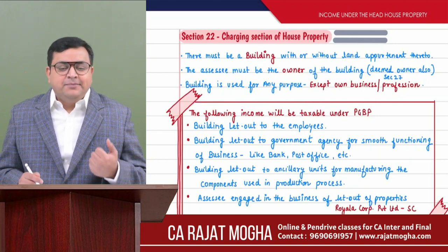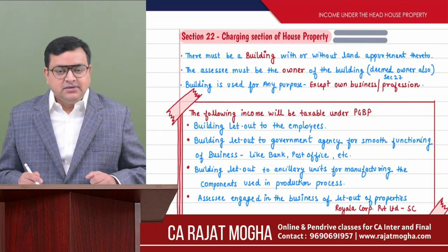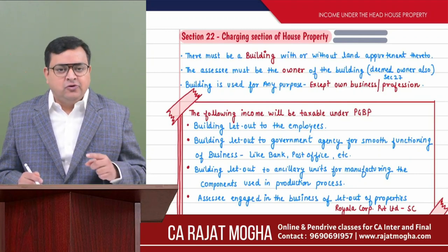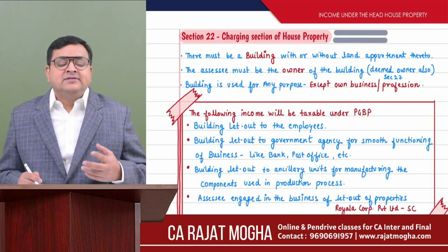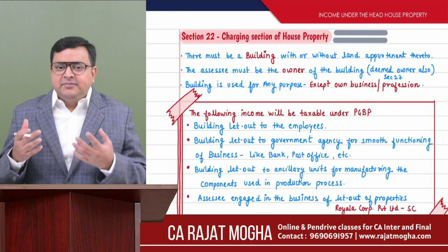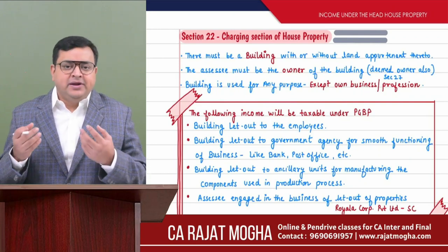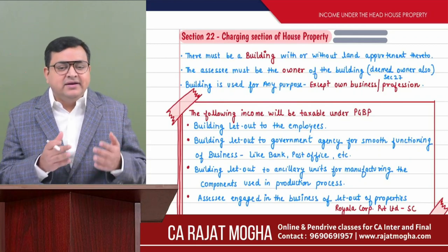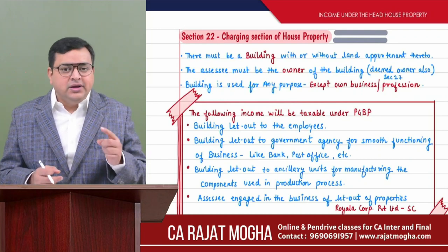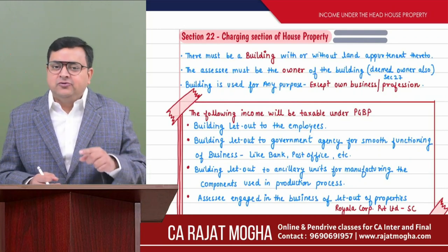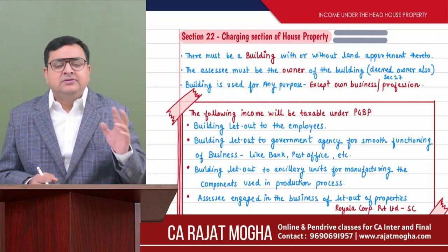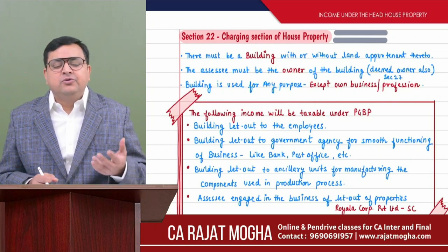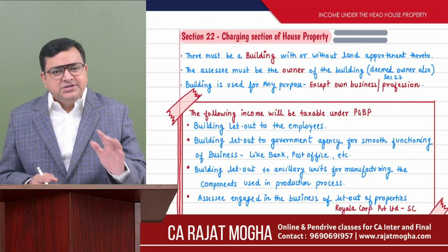The second thing is that the assessee must be the owner of the building. If the assessee is not the owner of the building, we are not going to tax that income under house property. There is something known as subletting — when Mr. A is a tenant, he takes a property on rent and further sublets it to someone else. In that case, since he is not the owner, the income will not be taxed under house property. It will go to IFOS — subletting income. But if subletting is the main business of the assessee, it can go to PGVP also, but generally keep it IFOS.